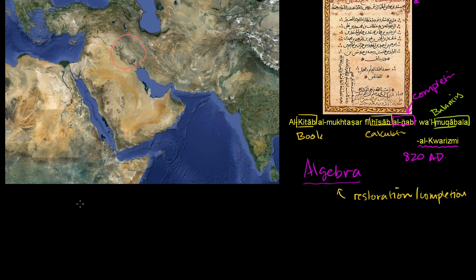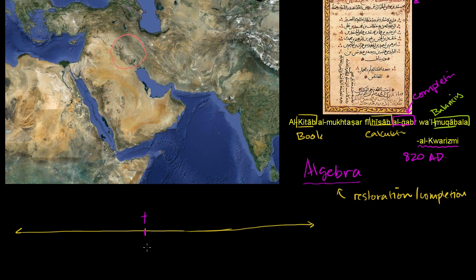So let me draw a little timeline here just so we can appreciate everything. Most of our modern dates are dependent on the birth of Jesus. When we want to be non-religious, we say Common Era or Before the Common Era. When we want to be religious, we say A.D. — Anno Domini, meaning 'Year of our Lord' — and B.C., Before Christ. So this is 1,000 in the common era, this is 2,000, and I'm sitting right about there. And this is 1,000 before the common era, and 2,000 before the common era.